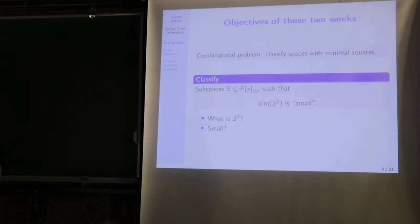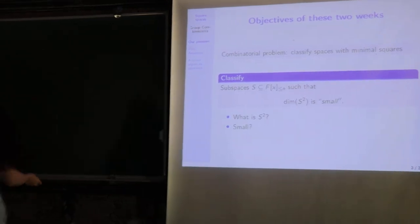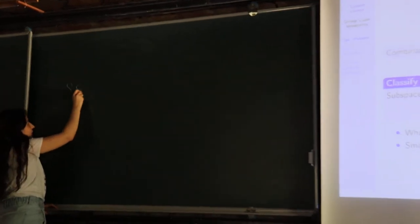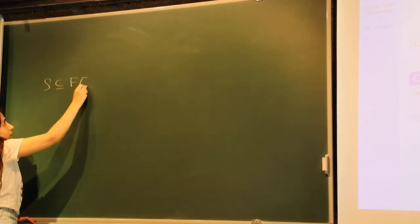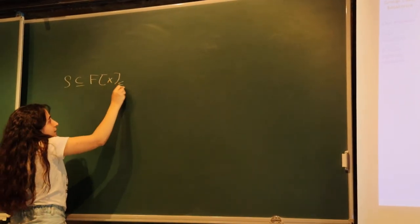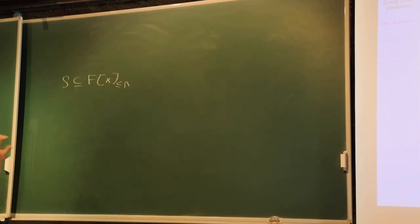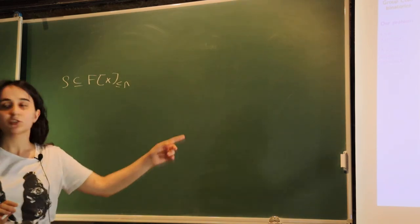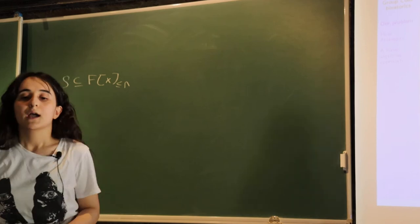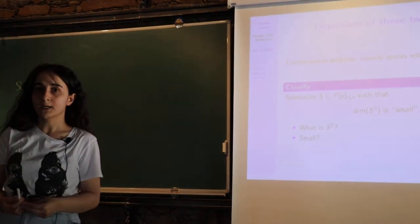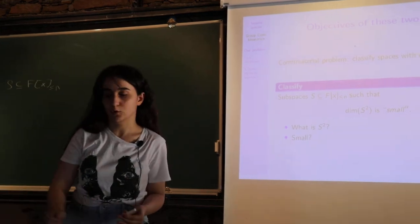To be more precise, we want to focus on all subspaces S of F[x]≤n, where this denotes all polynomials with degrees smaller than or equal to n. We want to classify all subspaces such that the dimension of S² is small. To understand what this means, we need to know what S² is and what 'small' means.